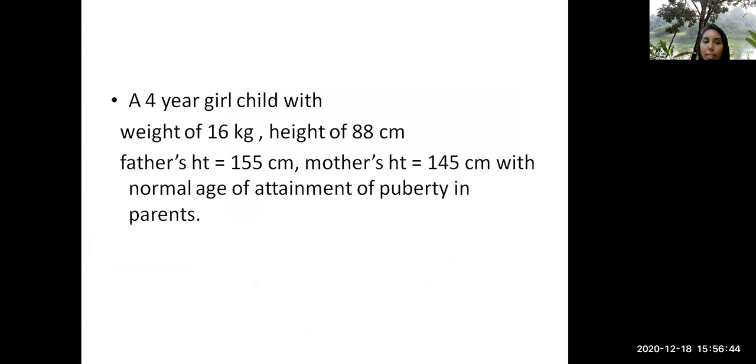So this is the first case scenario. A four-year-old girl child brought with weight of 16 kg, height of 88 centimeters, father's height of 155 centimeters, mother's height of 145 centimeters with normal age of attainment of puberty in parents. So what is the diagnosis?